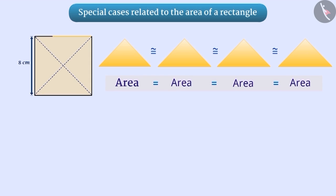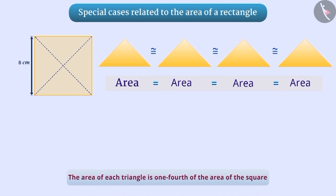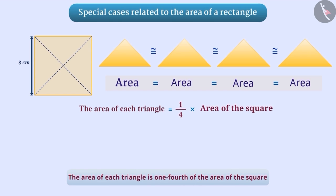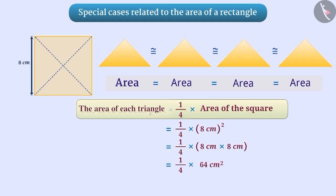Since one square is being divided into four equal parts, we can say that the area of each triangle is one fourth of the area of the square. In this way, the area of each triangle will be 1 by 4 into area of the square, which means 1 by 4 into side squared. That is, 1 by 4 into 8 cm squared, which is equal to 16 square centimeters.